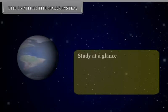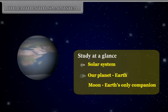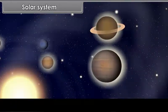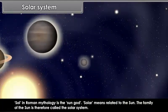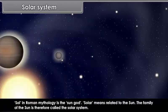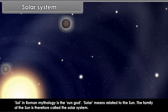Solar System. Sol in Roman mythology is the sun god. Solar means related to the sun. The family of the sun is therefore called the solar system.